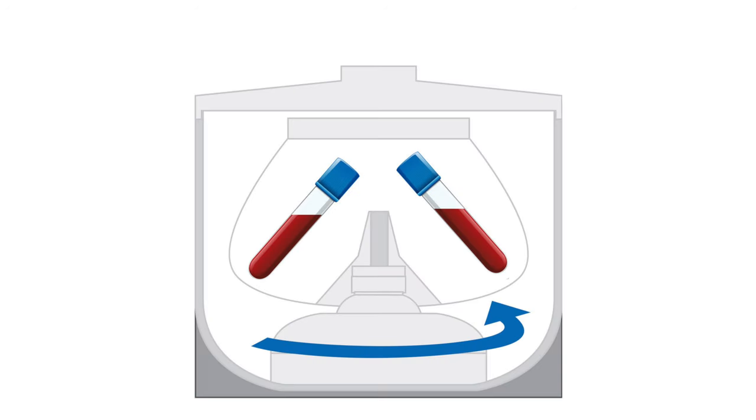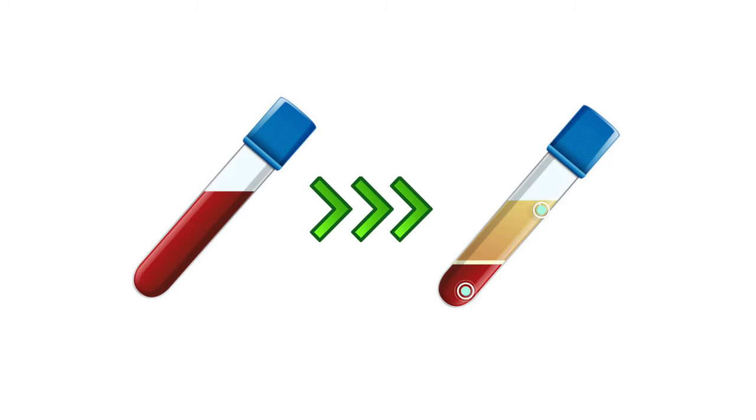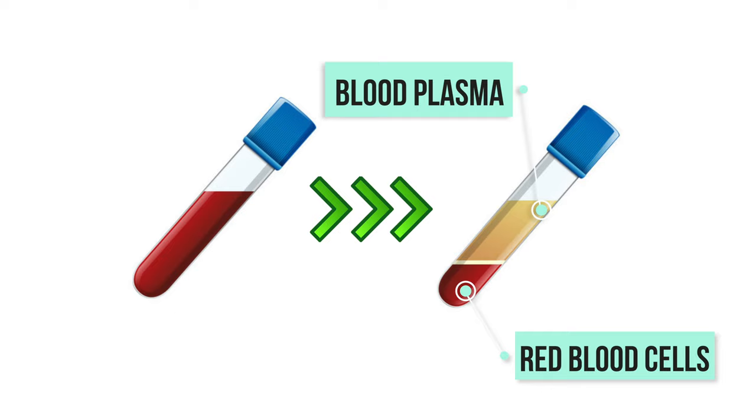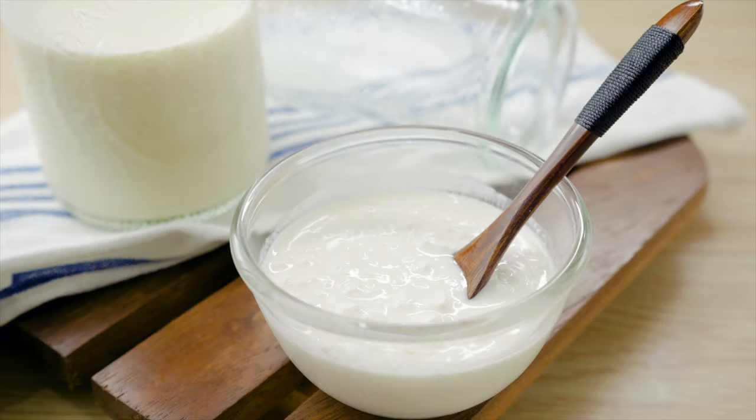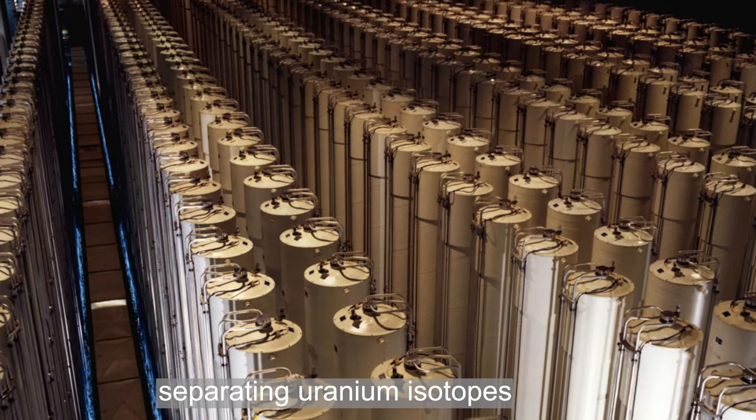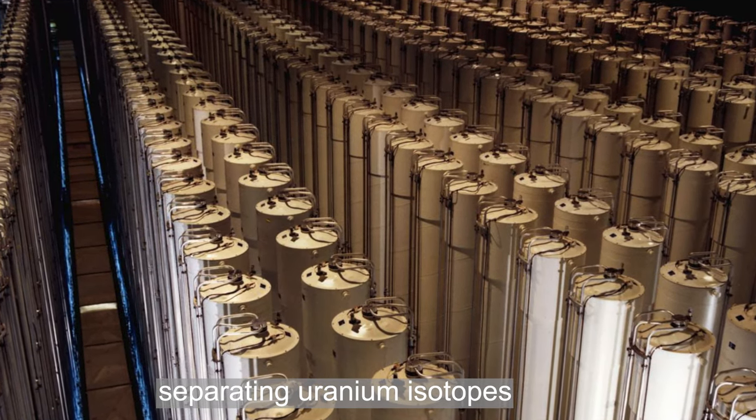For example, rather than waiting for blood sample to slowly settle, a centrifuge can be used to separate blood into plasma and red blood cells in a matter of seconds. Other examples of how centrifuges are used include separating cream from milk and separating uranium isotopes for nuclear power plants.